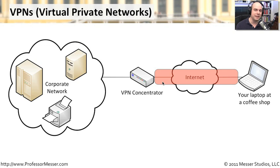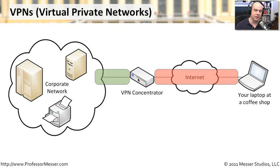If somebody looks inside those packets, they would just see gobbledygook — they would not be able to understand what's inside. Your VPN concentrator is in charge of taking that information, decrypting it, and dropping it off inside your corporate network. That means you'll have very secure connectivity, and once connected to your corporate network, you have access to the same servers, shares, printers, and resources as when you're physically inside.